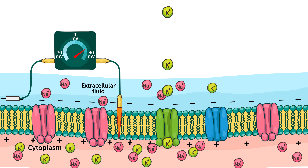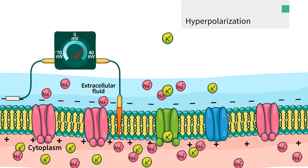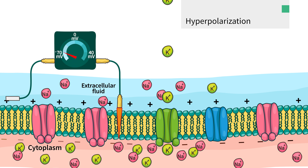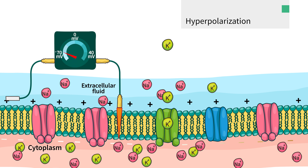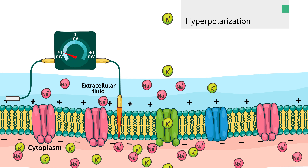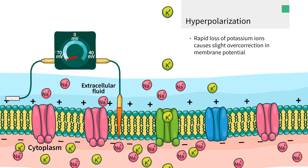This loss of cations quickly makes the membrane potential negative again. In fact, it overshoots a little bit and hyperpolarization occurs.